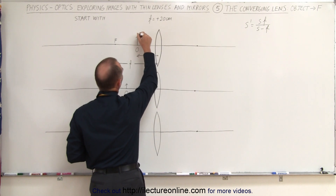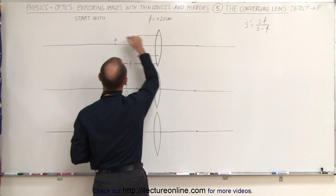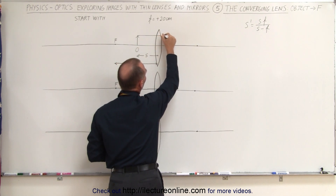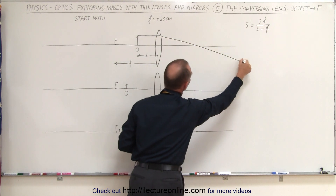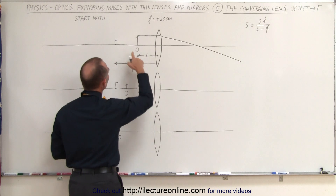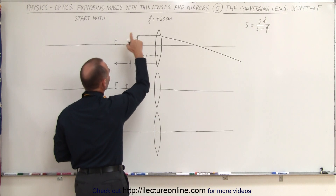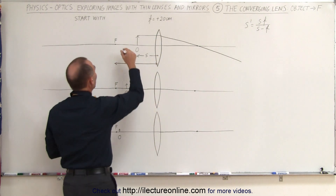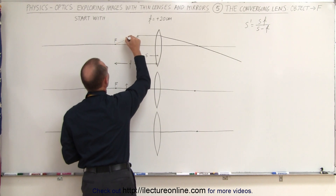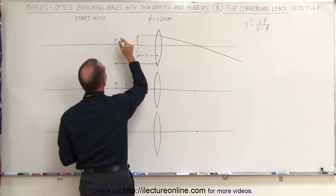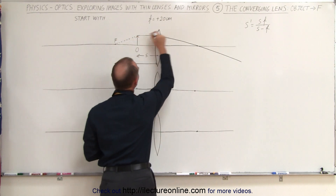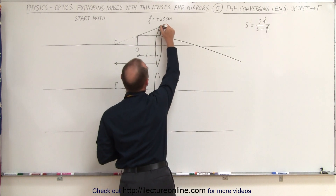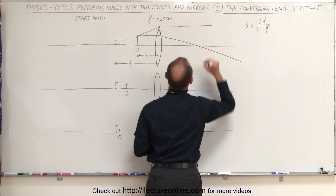First we need to draw a line parallel to the optical axis which goes to the halfway point of the lens until we hit the lens, and then the lens will bend the light so that it will go to the focal point on the other side of the lens. Secondly we have to draw a line from the tip of the object through the focal point, but since we're already past the focal point we have to start by drawing a dashed line from the focal point to the tip of the object. There we go, and then we continue with the line all the way to the lens. We'll make the lens a little bit longer so that'll work out just fine, and then the line will continue parallel to the optical axis on the other side.